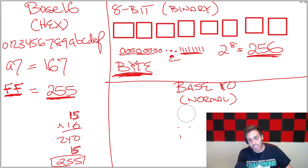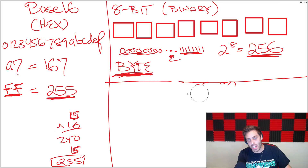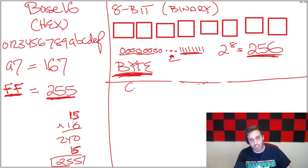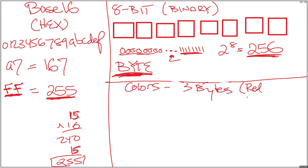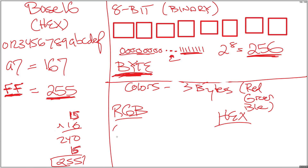You've probably encountered this as a web developer. For example, if you've ever used CSS, colors are represented as three bytes — a byte value for red, a byte for green, and a byte for blue — and this can represent most colors on the web. There are multiple ways to represent it: RGB values in base 10, and hex values in base 16. So you might see something like 255, 167, 19 as an RGB value, and this maps to its equivalent hex value.